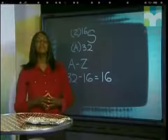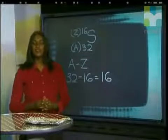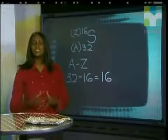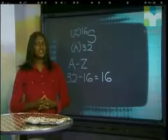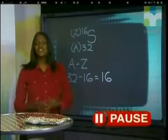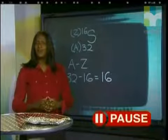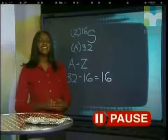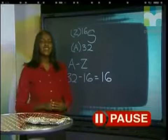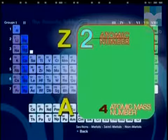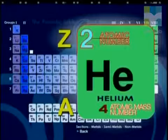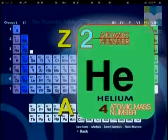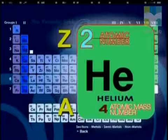Now, do you remember that Rutherford used alpha particles in his experiment? With all the information that we have discovered today, can you figure out what an alpha particle is? The alpha particle has an atomic mass number of 4 and an atomic number of 2. The alpha particle is in fact a helium nucleus.